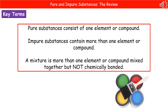Impure substances, then, contain more than one element or compound. One other term you might find associated with this style of question is mixtures. In chemistry, a mixture is where we've got more than one element or compound together, but they're not chemically bonded — they're just mixed in the same space.